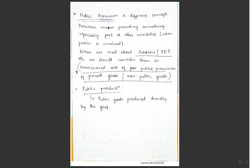Public goods are available to all and can be produced by private entities like NGOs too. If public goods are produced by the government directly, that is called public production. To recap: market mechanism involves producers and consumers; public goods and private goods differ by rivalrous/non-rivalrous and excludable/non-excludable criteria; the free rider problem arises with public goods; public provision is budget-financed goods given at low or no cost; and public production is government-produced public goods.